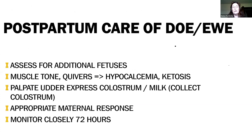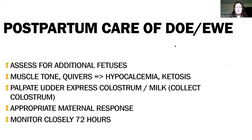Once we've gone through parturition, postpartum care of the ewe and doe involves assessing them for any additional fetuses, watching for signs of postpartum metabolic diseases, and checking whether they are producing colostrum and what the health of their udder is. This is also a good time to collect and bank milk — put it in your freezer — to have on hand as you go through the rest of your parturition season. Closely monitor does and ewes for good maternal response and that they are mothering up well to their offspring.